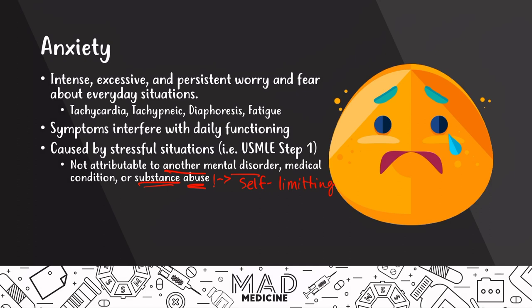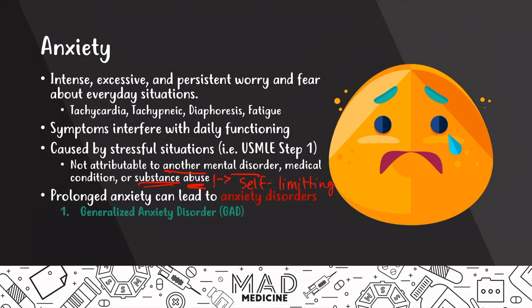Prolonged exposure to anxiety, prolonged levels of anxiety, are what leads to anxiety disorders. We all have some sort of anxiety, but we don't all have anxiety disorders. If you have an anxiety level that's high for a long period of time, you're going to end up developing an anxiety disorder. There are four main anxiety disorders for the USMLE Step 1: generalized anxiety disorder, adjustment disorder, social anxiety disorder, and panic disorder — though we'll have a separate video for panic disorder. Today we're discussing mainly the first three.